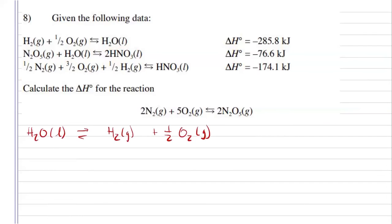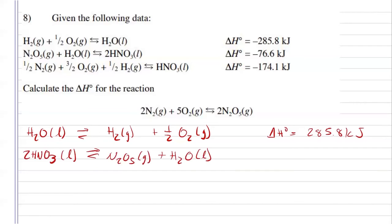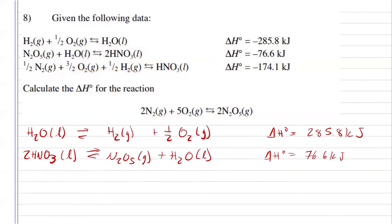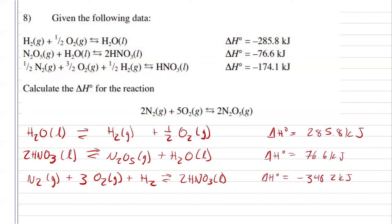Flipping the first equation, I have the water as my reactant, one hydrogen gas molecule as a product, and half a mole of oxygen gas there as well. So, that's going to change my enthalpy of the reaction from negative to positive. For the second one, I also flipped it, so now I'm going to have the nitric acid molecules producing the dinitrogen pentoxide and water. That will also change its enthalpy from positive to negative, so negative 76.6 kilojoules. And lastly, since I have two moles of nitric acid, I know that I'm going to have to multiply my third reaction by two, so that will be negative 348.2 kilojoules.